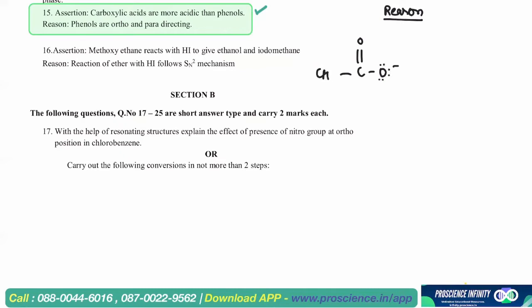Carboxylate ion has two resonance structures while phenol has five resonating structures but still carboxylic acids are more acidic than phenols having two resonating structures.